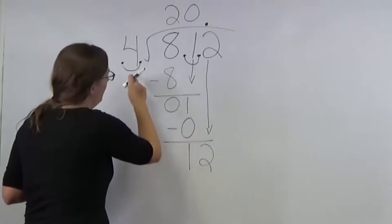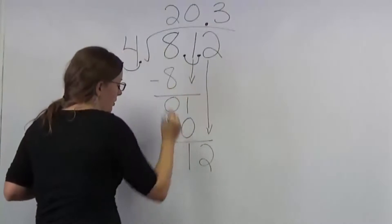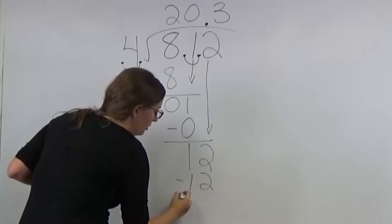And then 4 goes into 12 3 times. 3 times 4 is 12, and then you will have a 0 remainder.